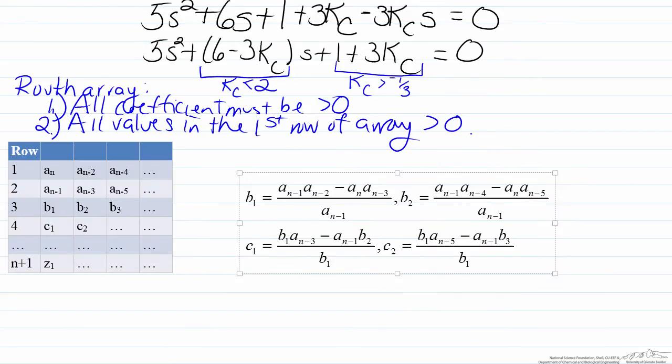So to do that we will bring up the Routh array and the relevant equations that we need for calculation. So here is the Routh array and the relevant equations. So here we will start with filling in the values from our characteristic equation, so an will be 5,